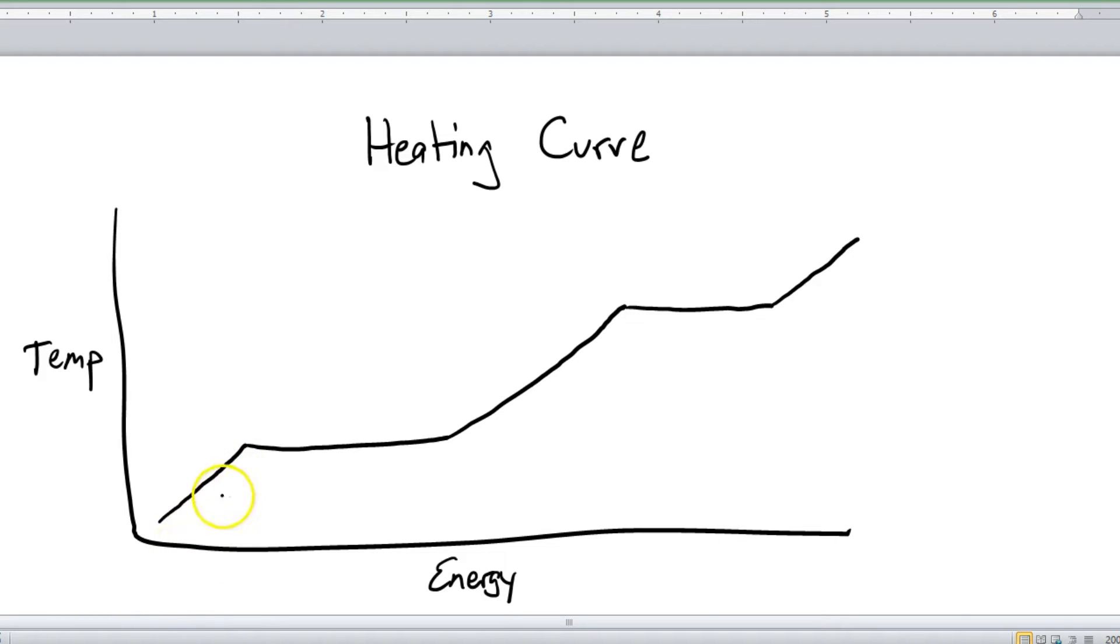Let's go ahead and label it. Well down here on this diagonal section, this is the solid phase. The middle diagonal section is the liquid phase. And as you've probably already guessed, this top section is the gas phase.